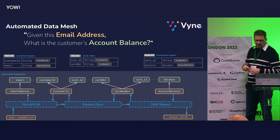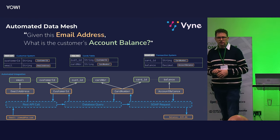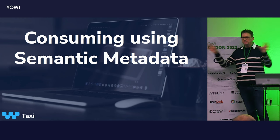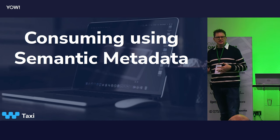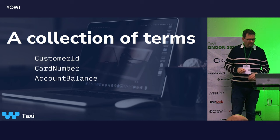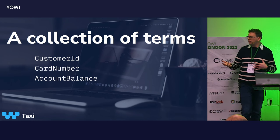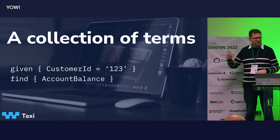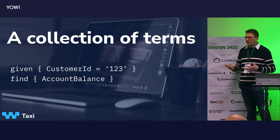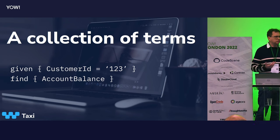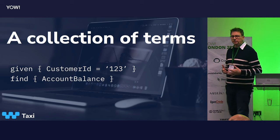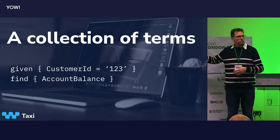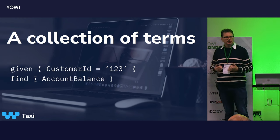We have a thing that does that called Vine. And because we didn't have to build anything, when we rip out that SOAP API and replace it with gRPC, or replace that SQL database with an API gateway, there's nothing for me to change — the API specs are republished with richer metadata and our integration automatically adapts. Now that we have something that builds the integration for us, we need a way to communicate with it — to ask: given this customer's email address, what's their account balance? We already have a collection of terms we used for describing producer APIs. They're not coupled to any specific system; they just describe our business. So I can say: given a customer ID of 123, find me their account balance.